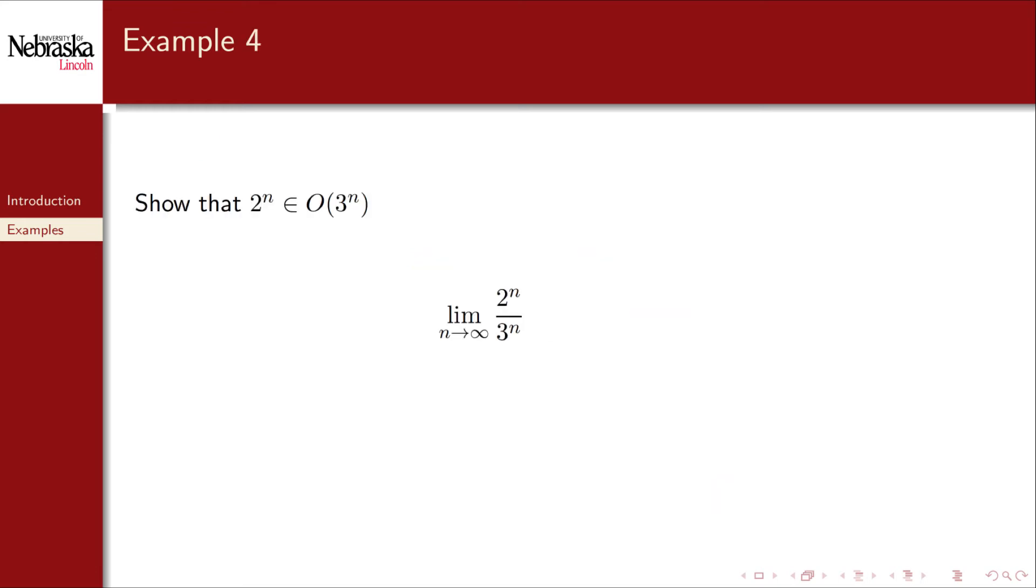Here's a simplified version of a previous example. We want to show that 2ⁿ is Big O of 3ⁿ. If we apply L'Hopital's rule here, we won't make any progress. The derivative leaves both exponential functions undiminished.